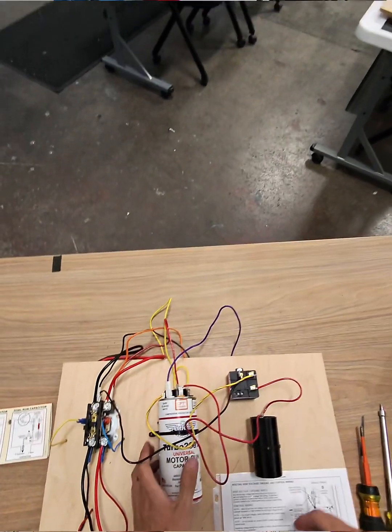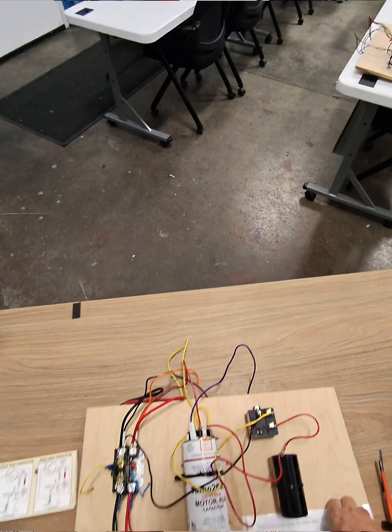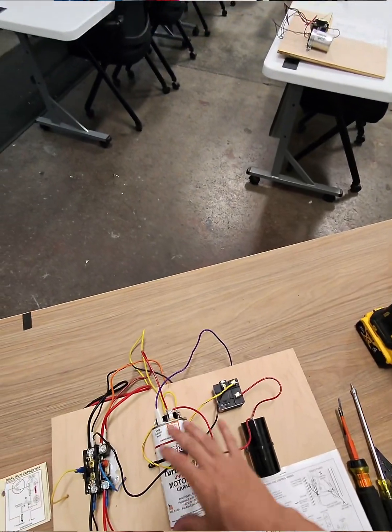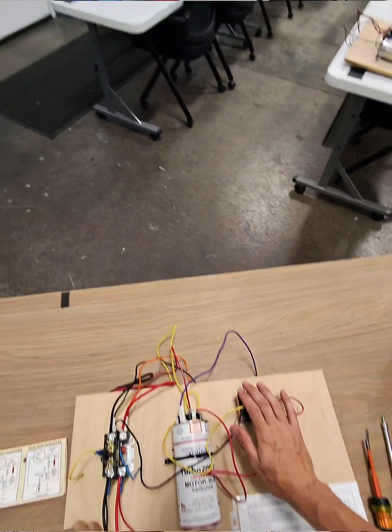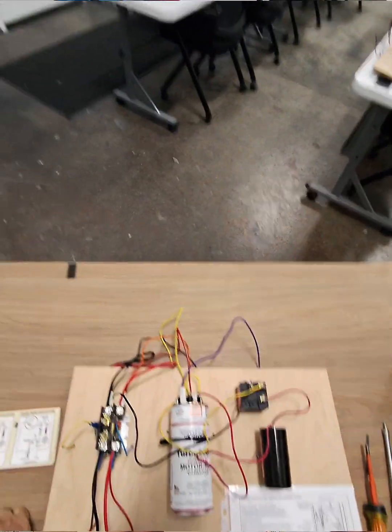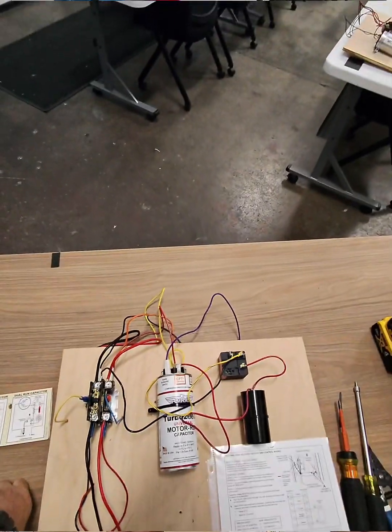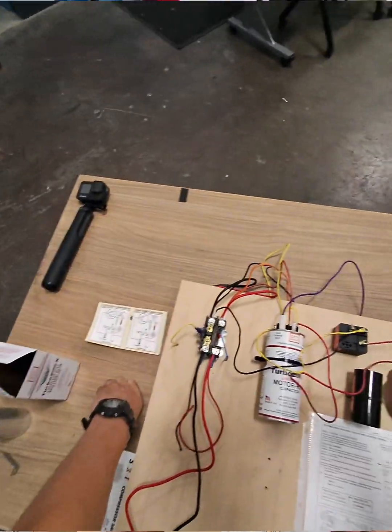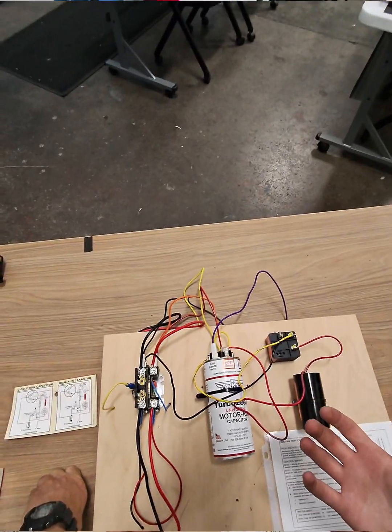So on a standard dual-capacitor, say your Herm side fails, your hard start kit will still start that compressor up and allow it to run, and it's going to run really harsh, so really inefficient. Your amps are going to be really high, and that's going to tear down the compressor.